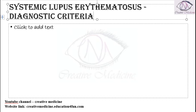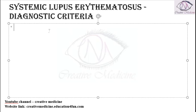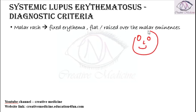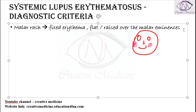First we will see the diagnostic criteria based on the symptoms. The first criterion is malar rash. Malar rash is the presence of fixed erythema, which is flat or raised, over the malar prominences. If the patient has fixed erythema present over the malar prominences, we call it malar rash.